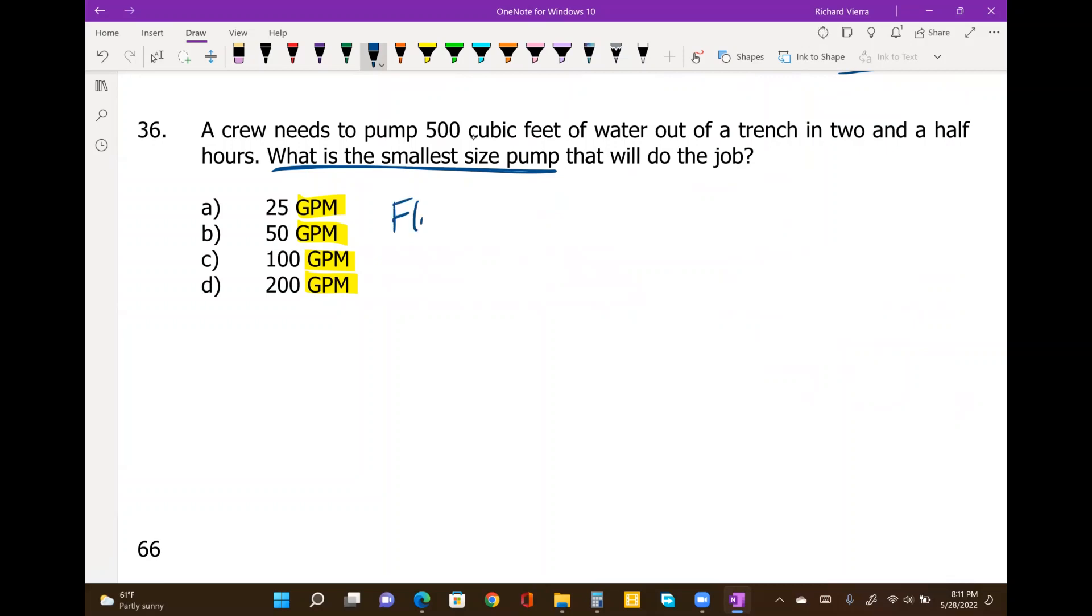So still to calculate our flow in gallons per minute means gallons divided by minutes. So we get a volume in gallons that we're going to divide by a time in minutes.